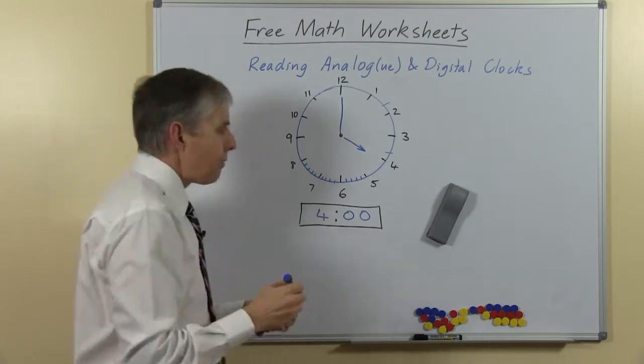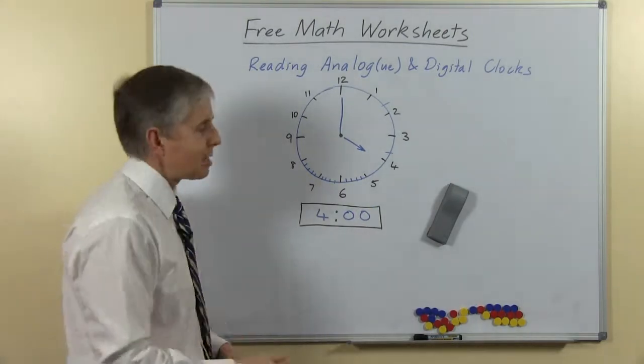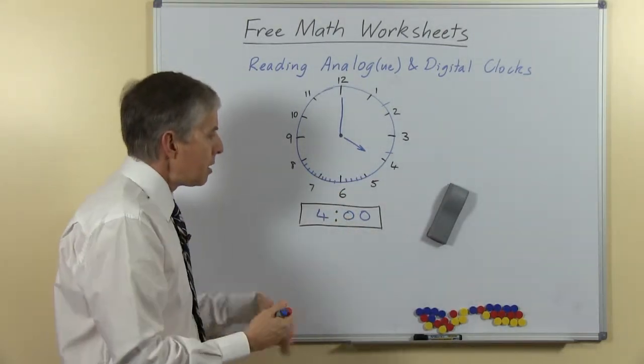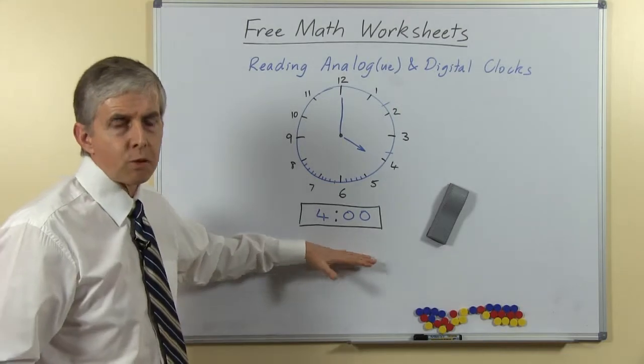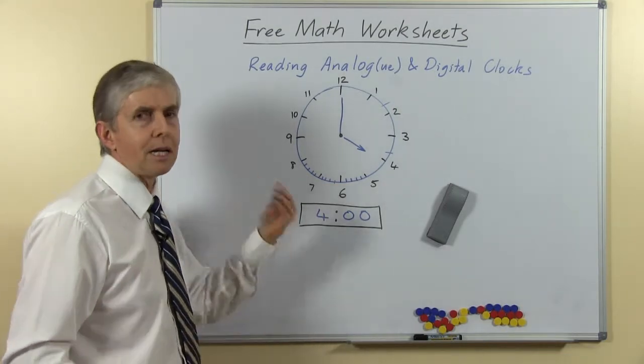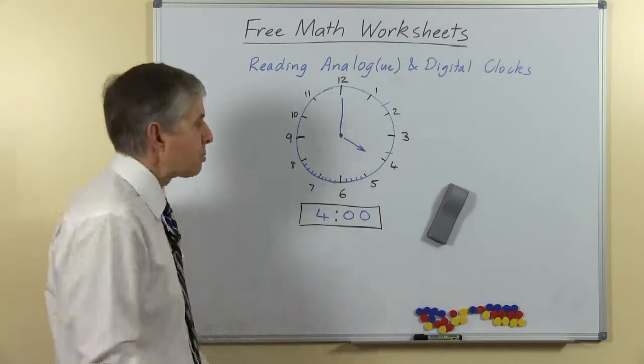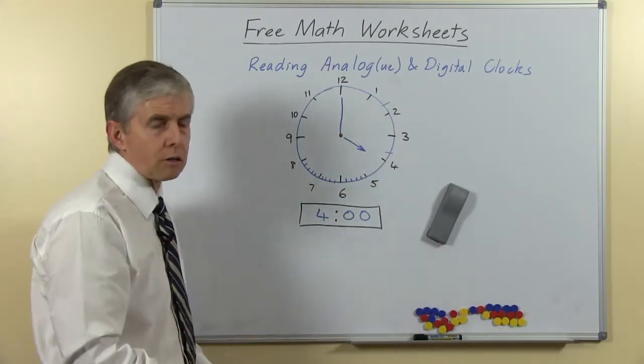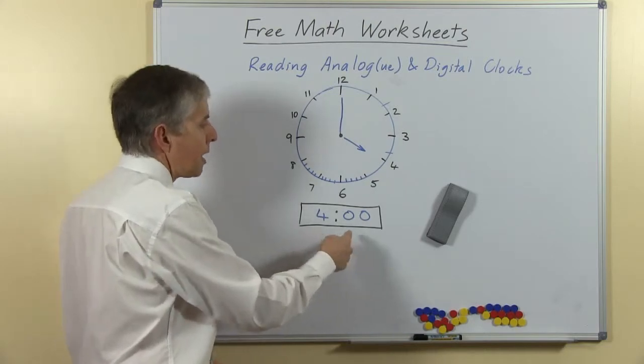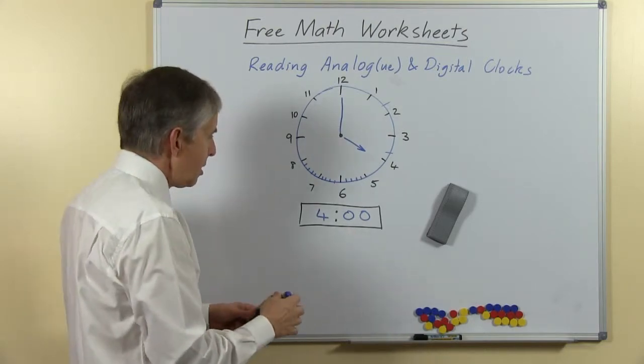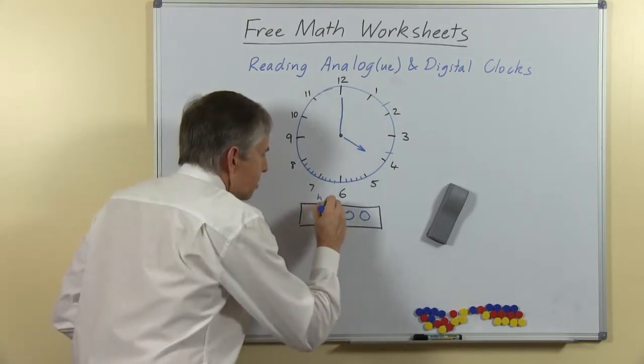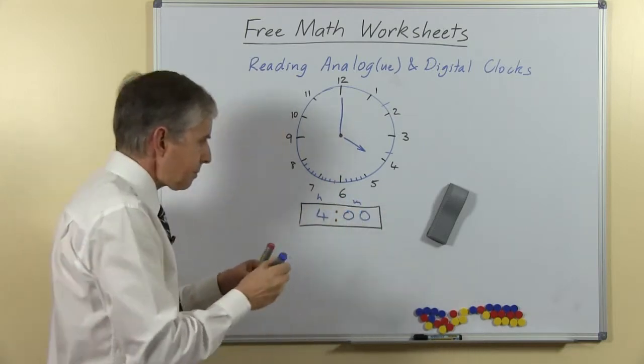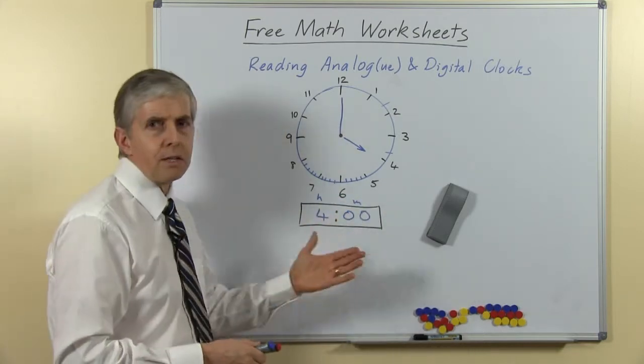I believe it's valuable for our students to see the two together. The thing about the digital clock is it's more straightforward in its presentation of the hours and minutes, because they don't cross over each other and so on the way the hands on an analog clock do, they simply show a number for the hours and a number for the minutes. And of course we can label this for our students.